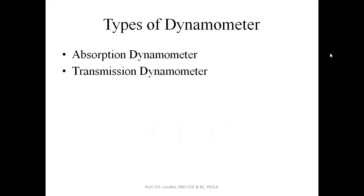This dynamometer is basically classified into two categories. One is absorption type of dynamometer and another one is transmission type of dynamometer. In absorption type of dynamometer, whatever the brake power we are measuring from the engine, that power is dissipated in the form of heat — the power is absorbed and we are not able to utilize it for any other activity. This type is called as absorption dynamometer.